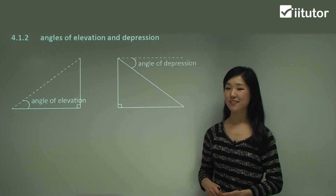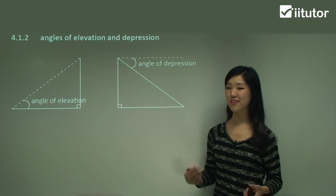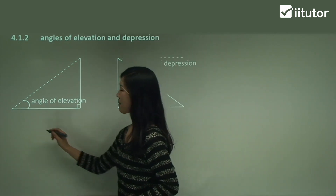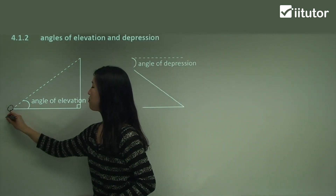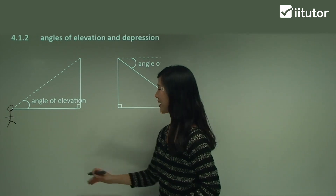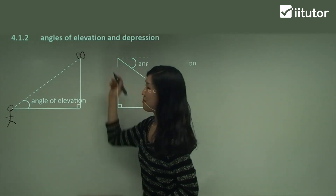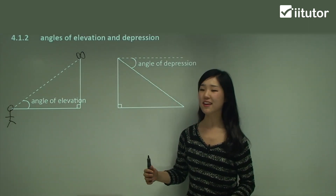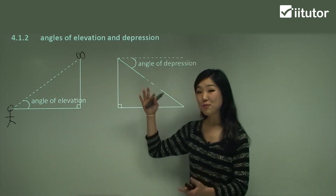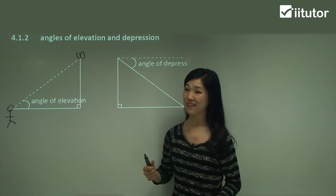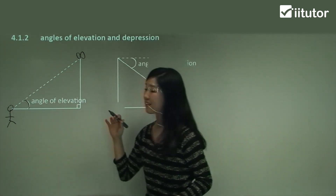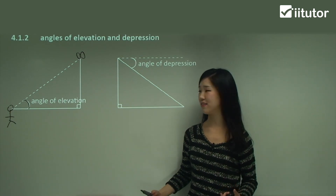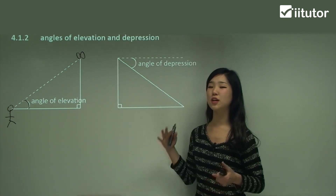Now let's look at angles of elevation and depression. There are two concepts to remember. The first one, angle of elevation: say this is me looking up at a butterfly. The angle in which I look up at the butterfly is the angle of elevation. That's basically it — the angle in which I look up at.